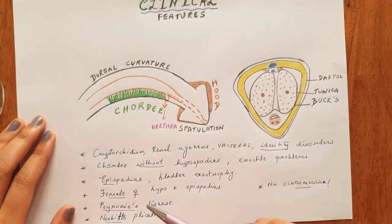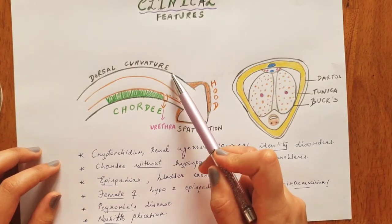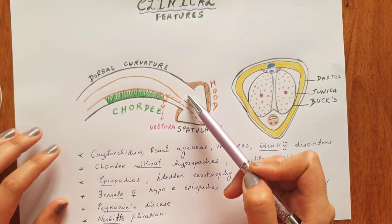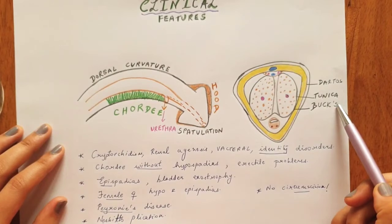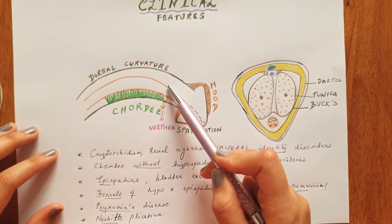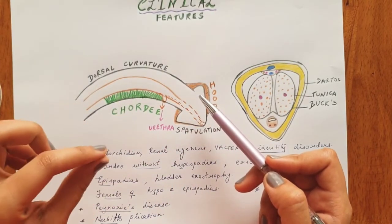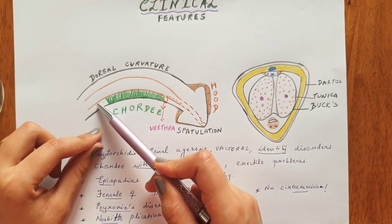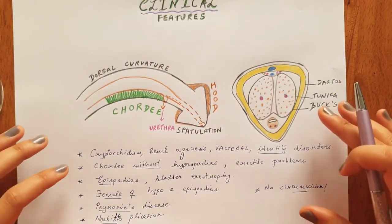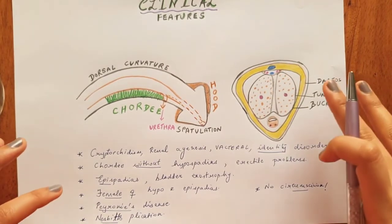There is another condition called Peyronie's disease which happens in older males, where fibrotic plaques are seen along the penile region, leading to chordee and curvature. In those cases the main culprit is the tunica region, and a procedure called Nesbit plication used to be done. In that procedure, transverse ellipses of the tunica region along the length were excised and closed in a vertical fashion, which would help correction of this curvature. Nowadays collagenase injections and other developments have occurred in Peyronie's disease, but that is a different disease we are not discussing further.